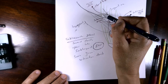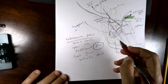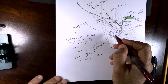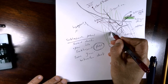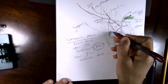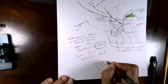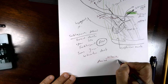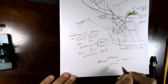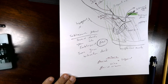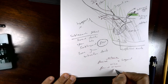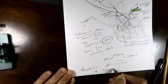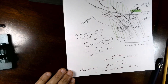Regarding blood supply: the facial artery is closely related to the gland, traveling at the posterior part of the gland then coming between the gland and submandibular fossa, sending glandular branches. So the arterial supply comes from branches of the facial artery and some branches from the lingual artery. Venous drainage is via the facial and lingual veins. Lymphatic drainage goes to the submandibular lymph nodes.